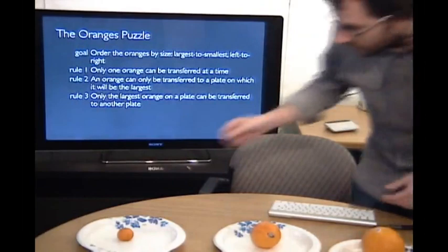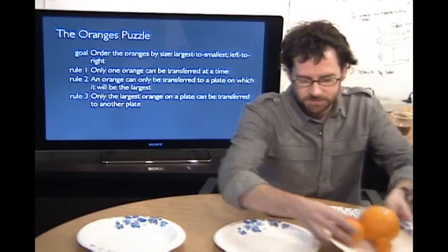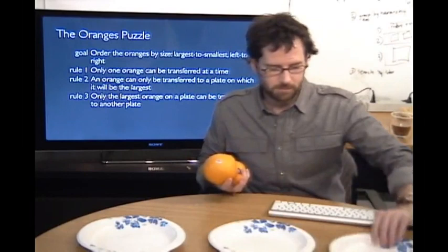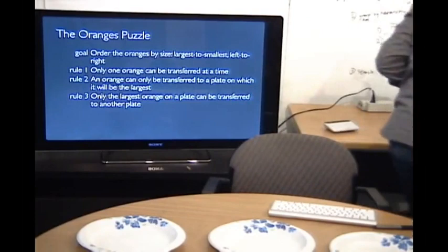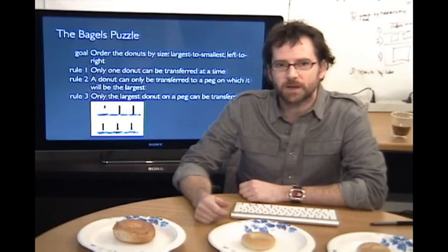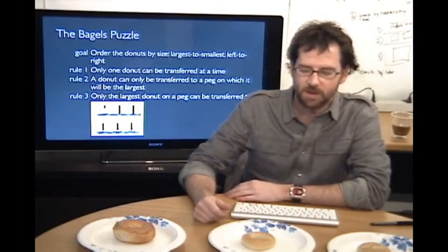And there's a couple other diners who got similar orders. They all wanted bagels. So, they had a first course of oranges. The second course is going to be bagels. The real bagels puzzle is, why can't you get a decent bagel in California? But the bagels puzzle that we have for today is a little bit different. So, we have our largest bagel, medium bagel, smallest bagel.